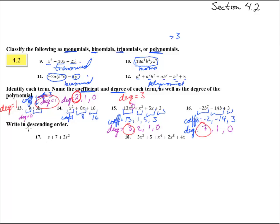Number 17 says to write in descending order. Descending means headed down, so we've got to start with the biggest degree and go down from there. We get 3s squared — that's the biggest one — then plus s, and then plus 7.